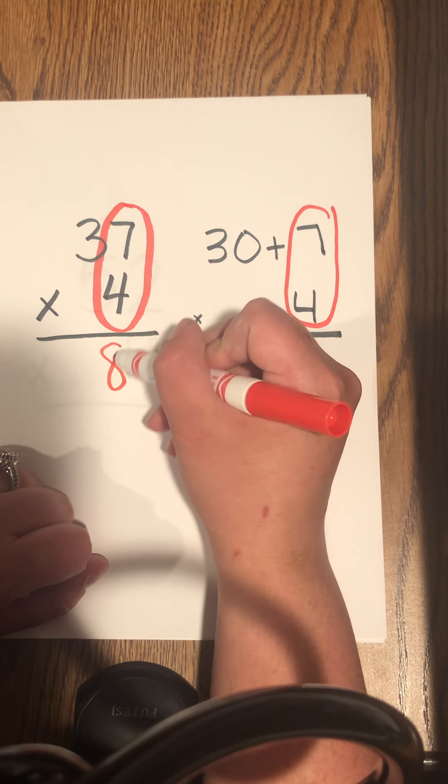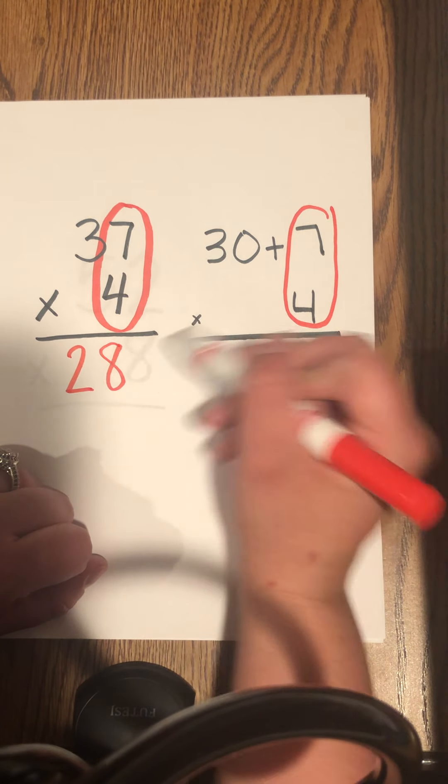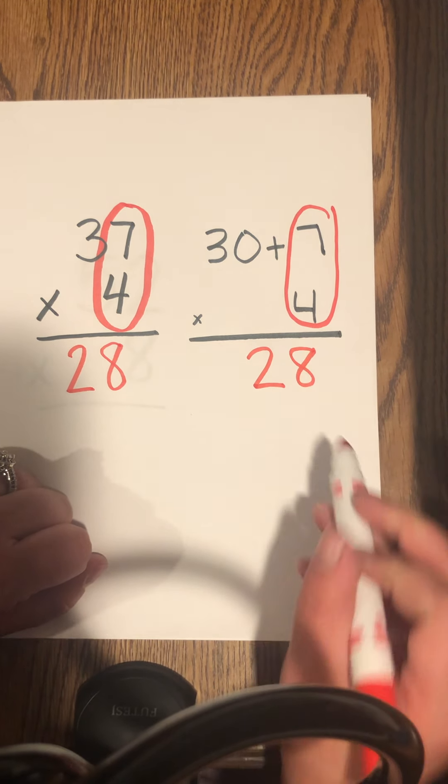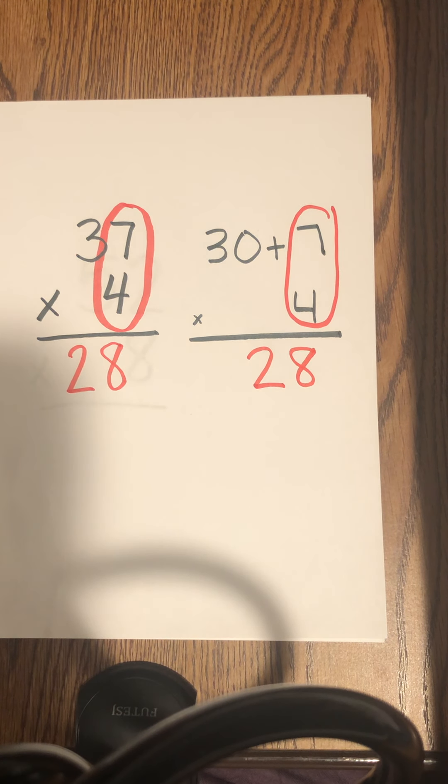So 7 times 4 is 28. And so that's going to be that value right there. Now, that's not going to be my whole answer, right? That's only looking at my ones place value.